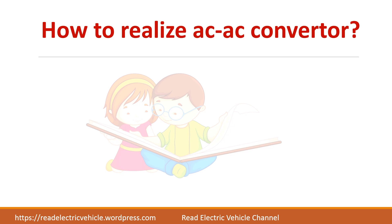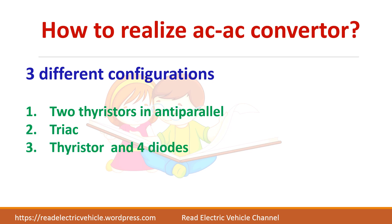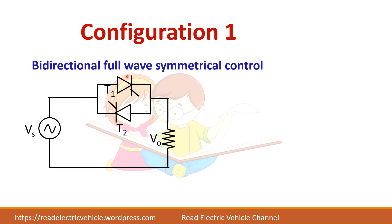There are three configurations for AC-AC conversion. Configuration 1 uses two thyristors connected in anti-parallel. This method is called bidirectional full-wave symmetrical control because both thyristors have the same firing angle, giving a bidirectional full-wave controlled output.